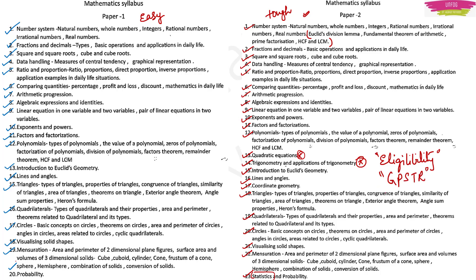Karnataka TET Paper 2 is very, very important because you need to qualify Paper 2 to be eligible for writing the GPSTR exam. The GPSTR exam is easier when compared to HSTR, and it is also conducted frequently — HSTR was not conducted since 2015, but GPSTR was conducted in 2019 and then in 2022, and we are expecting it this year also. That is the reason why I always tell aspirants: if you have not cleared TET, please make sure you write this exam this time and qualify it, so that you become eligible for GPSTR.